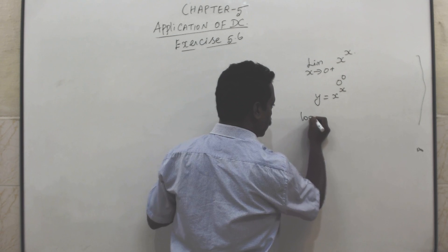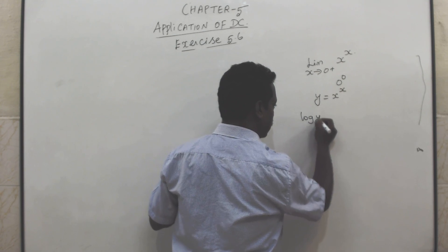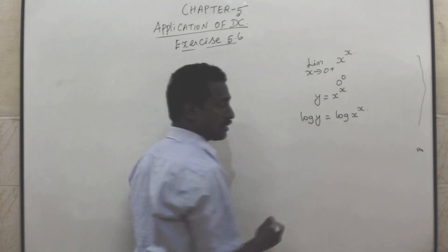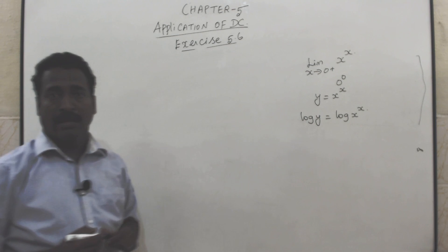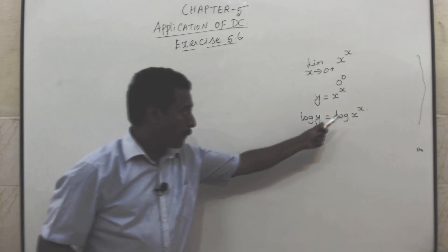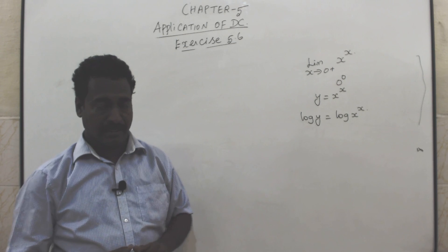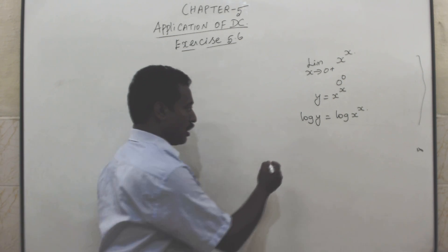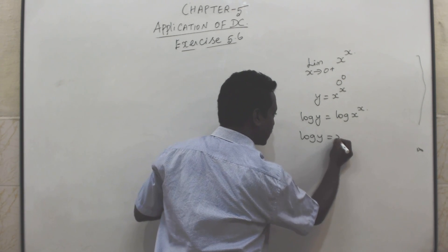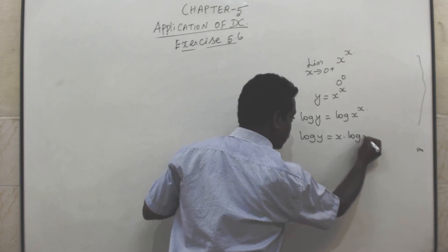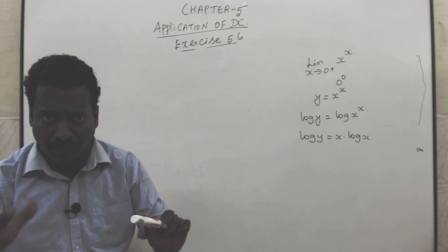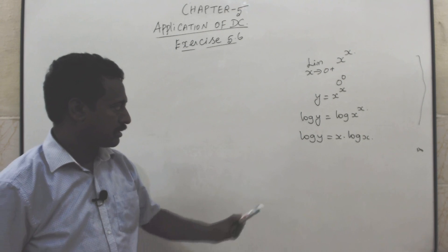Taking log on both sides: log y = log(x power x). Power comes to the front, so log y = x·log x. This is in the general form f(x) by g(x).